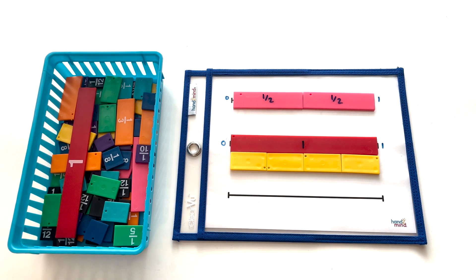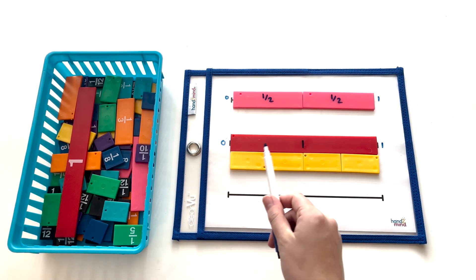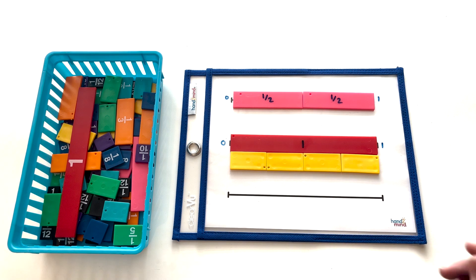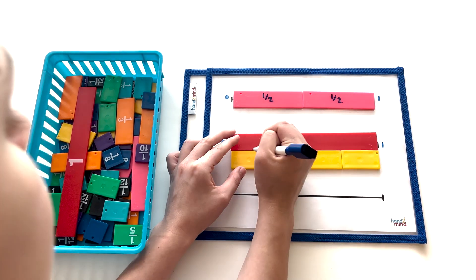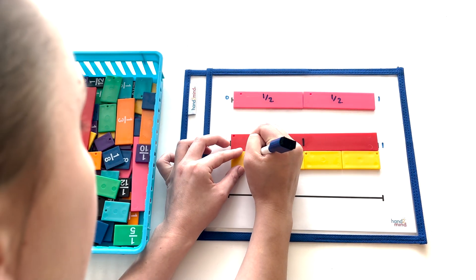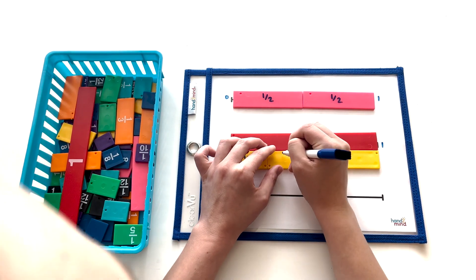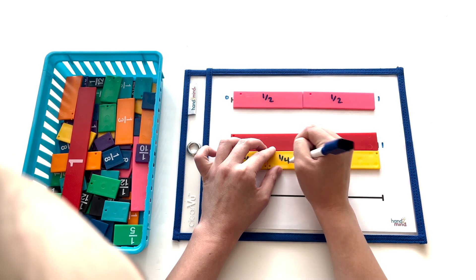We can see here that it takes exactly one, two, three, four of the yellow fraction tiles to equal one whole. So we can label the blank side of each yellow rainbow fraction tile with the fraction one-fourth.